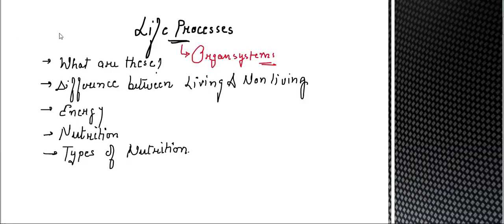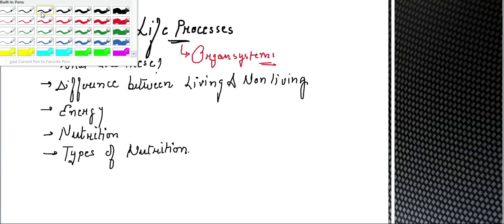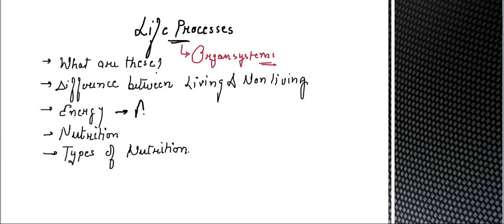So I have planned to cover these many points: what are the life processes, the difference between living and non-living organisms, what is energy and from where energy comes — we discussed that energy comes from food, the nutrients present in food give us energy. Energy is stored in the body in the form of ATP — Adenosine triphosphate — produced in the mitochondria. The two basic types of nutrition are autotrophic and heterotrophic, with further categorization of heterotrophic nutrition which we have discussed.